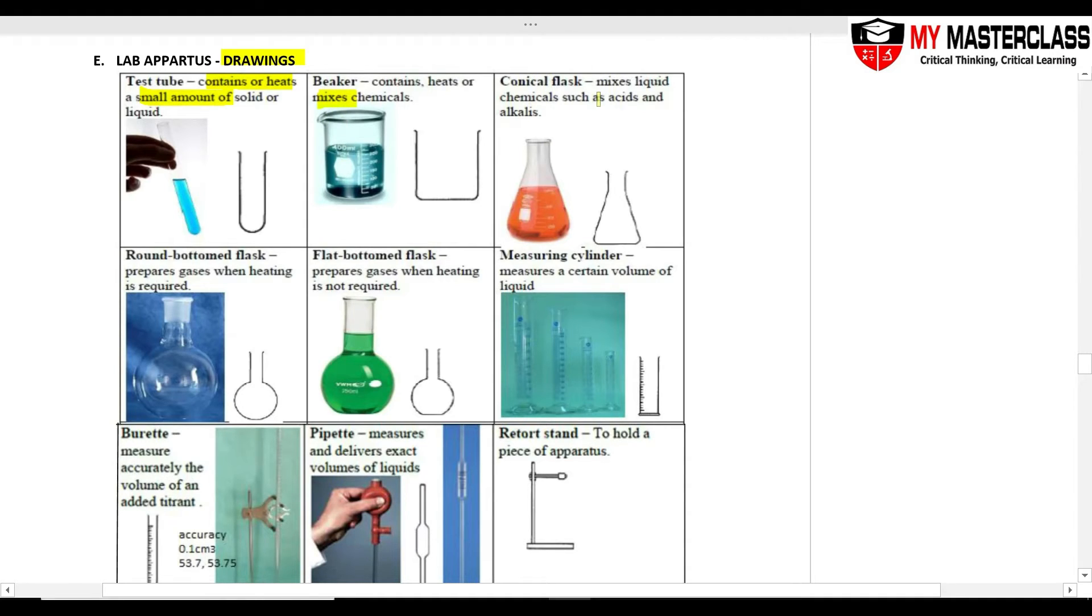Conical flask, this one is to mix liquids such as acids and alkali. The big difference between your beaker and your conical flask is that this conical flask, the mouth is very small. So when I say the mouth is very small, meaning to say the opening is very small so that the chemicals don't spill out very easily. So it's more safe. It's safer to heat your acid or to mix your acids and alkali.